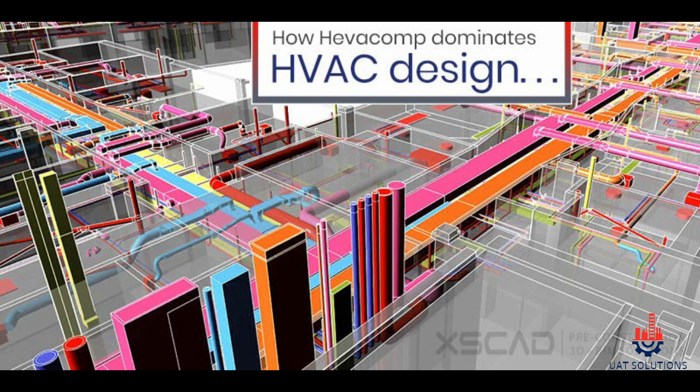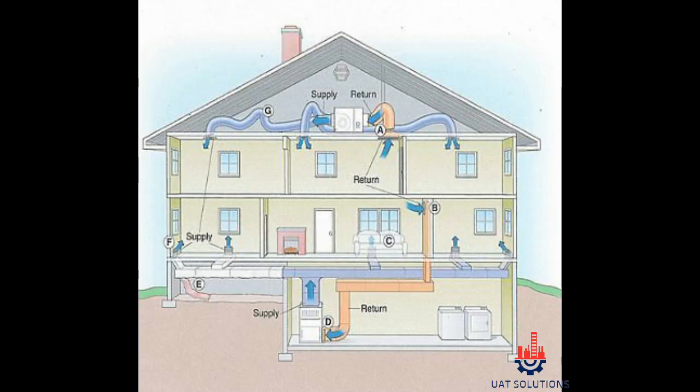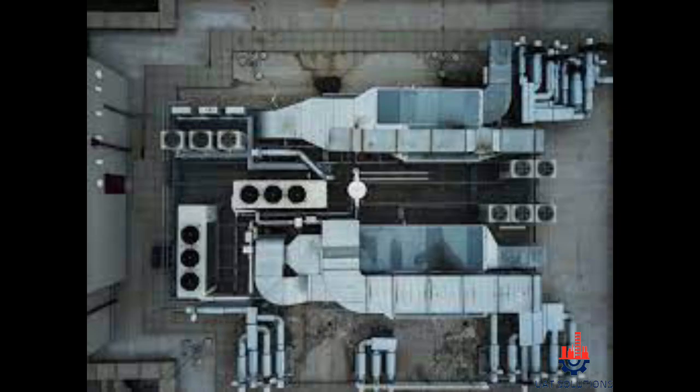Welcome back to UA Technical Solutions. In this tutorial, we will discuss how to design an HVAC system for a residential or commercial building, including calculating sensible heat load, latent heat load, and determining the size of the air handling unit, variable air volume box, and chiller capacity. Please watch the full video to learn the full calculations and method.